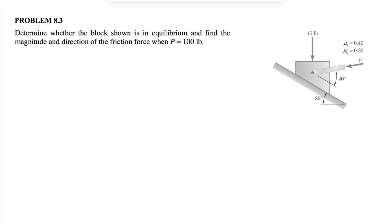All right guys, we're going to be solving question 3 from the 8th chapter of the Beren Johnson textbook engineering mechanics. In this one, we need to determine whether the block is in equilibrium and find the magnitude and direction of the friction when our force P is 100 pounds.